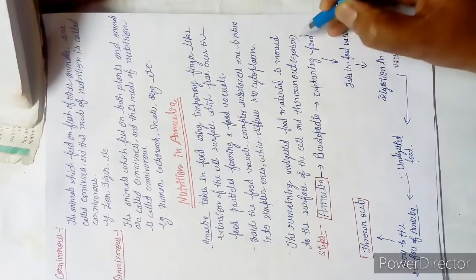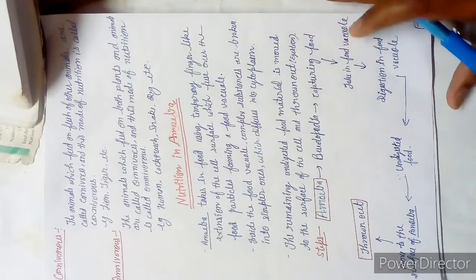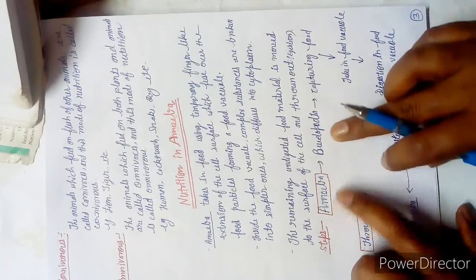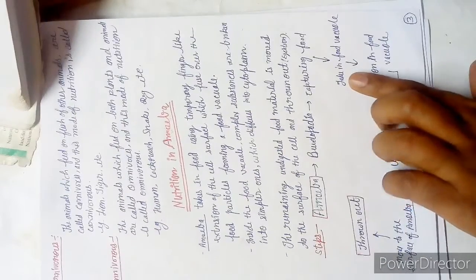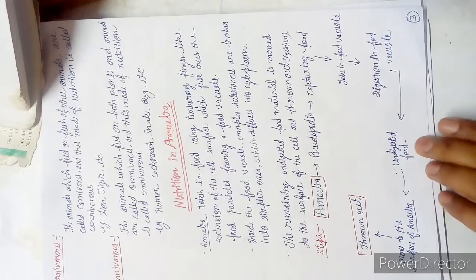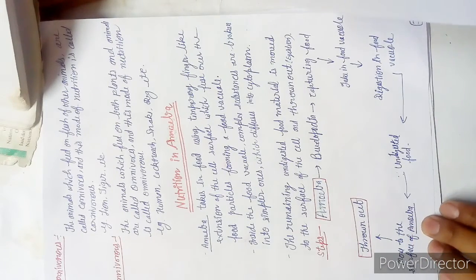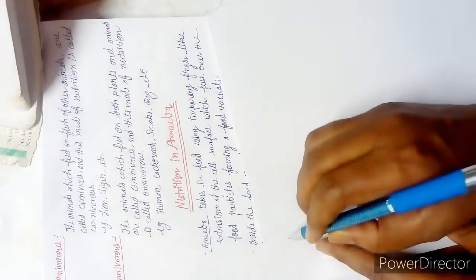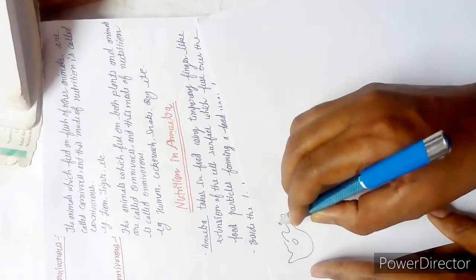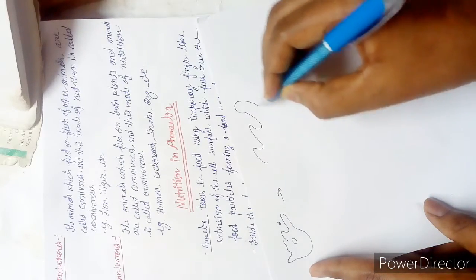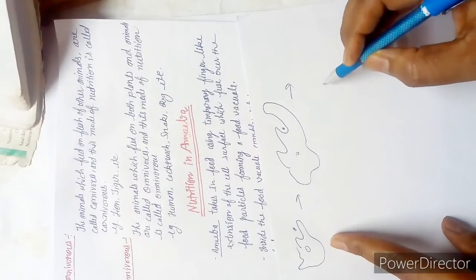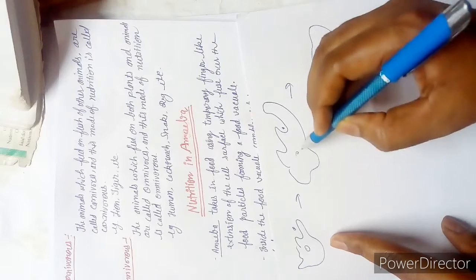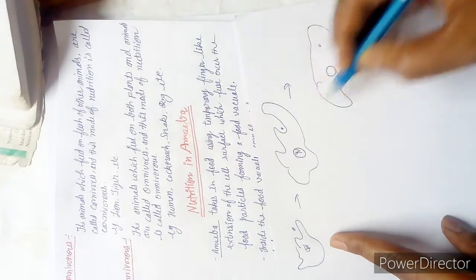The steps are: first, pseudopodia is formed in amoeba. Then food is captured and taken in. Next is digestion in the food vacuole. Undigested food moves to the surface of amoeba and is thrown out. Suppose this is amoeba in irregular shape, there's a food particle, and in the next diagram the food is coming inside.